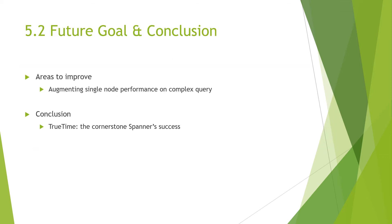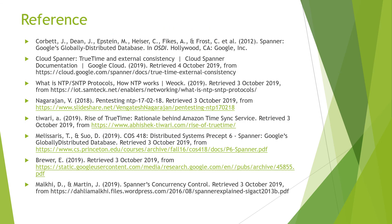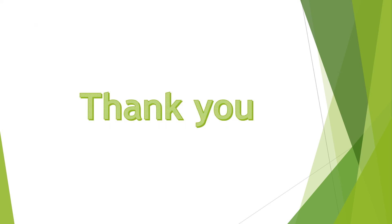Finally, future goals and conclusion. Google identified that node-local data structures show poor performance on complex queries, and they have aspired to improve this significantly. In conclusion, behind Spanner's remarkable success is the introduction of the TrueTime API, which has made it possible to build a largely distributed database system with much stronger time semantics and enforced tighter bounds on clock uncertainty. Here you can see the list of references used for our study. Thank you very much for your attention.